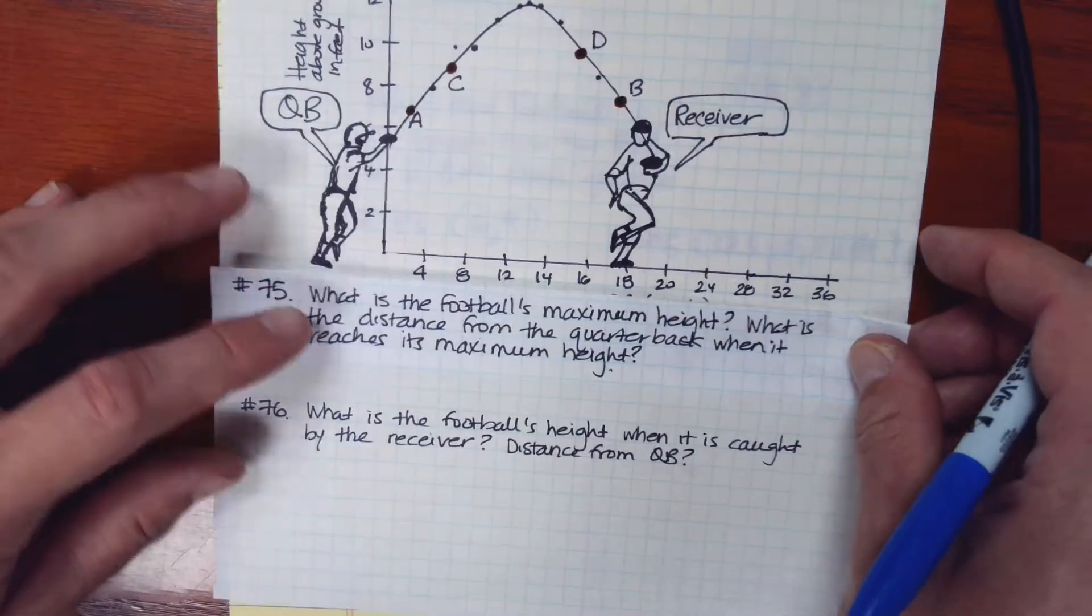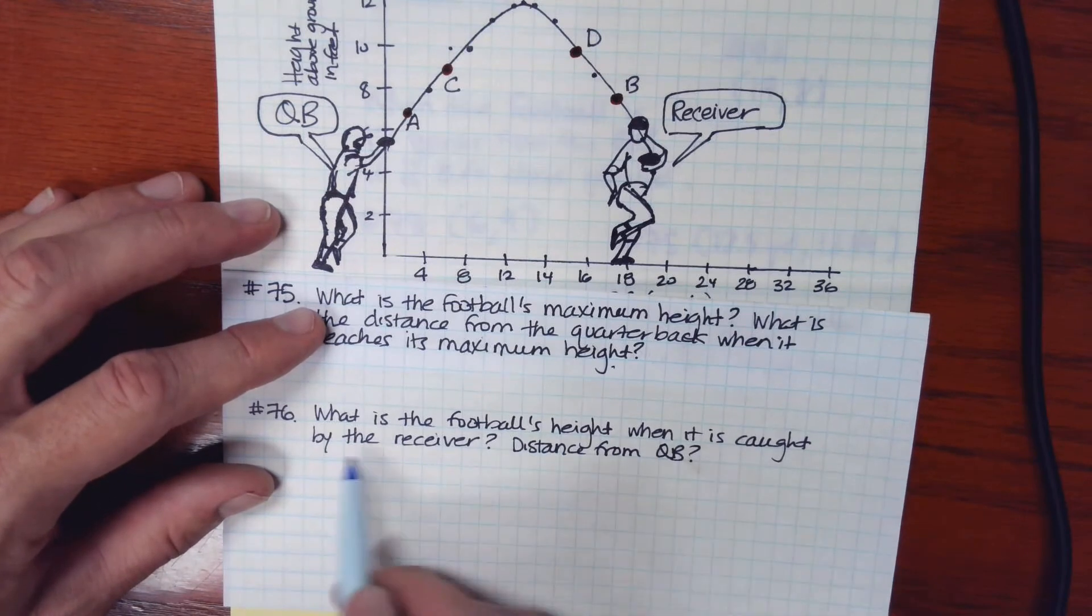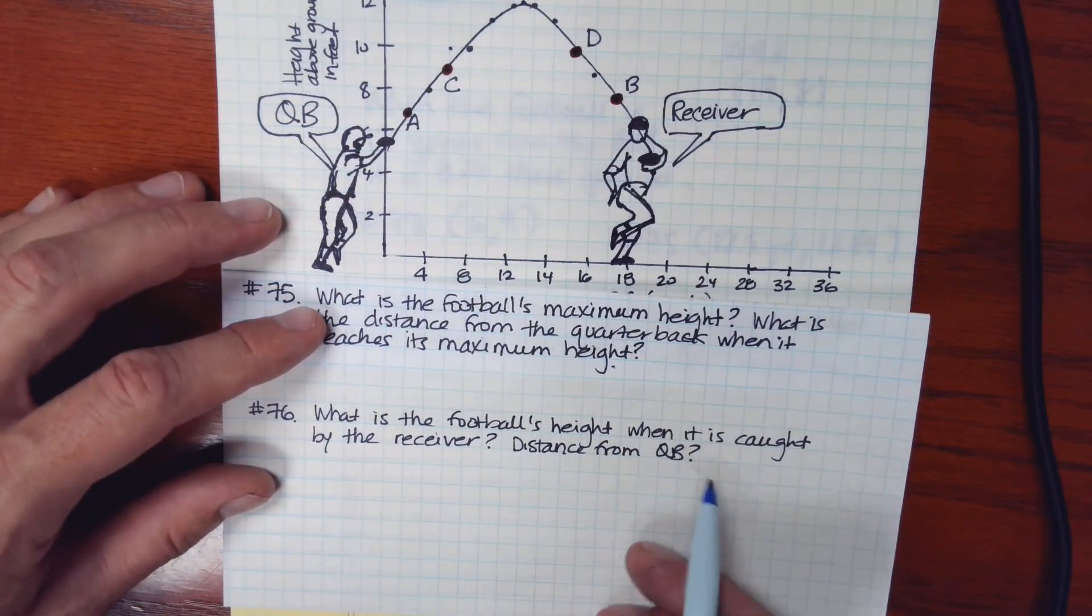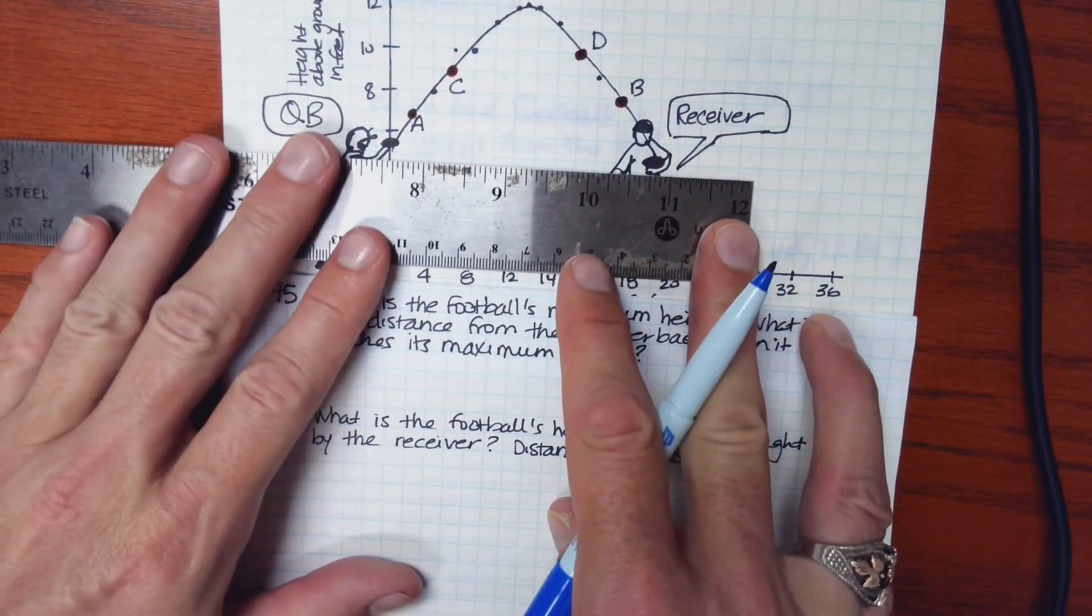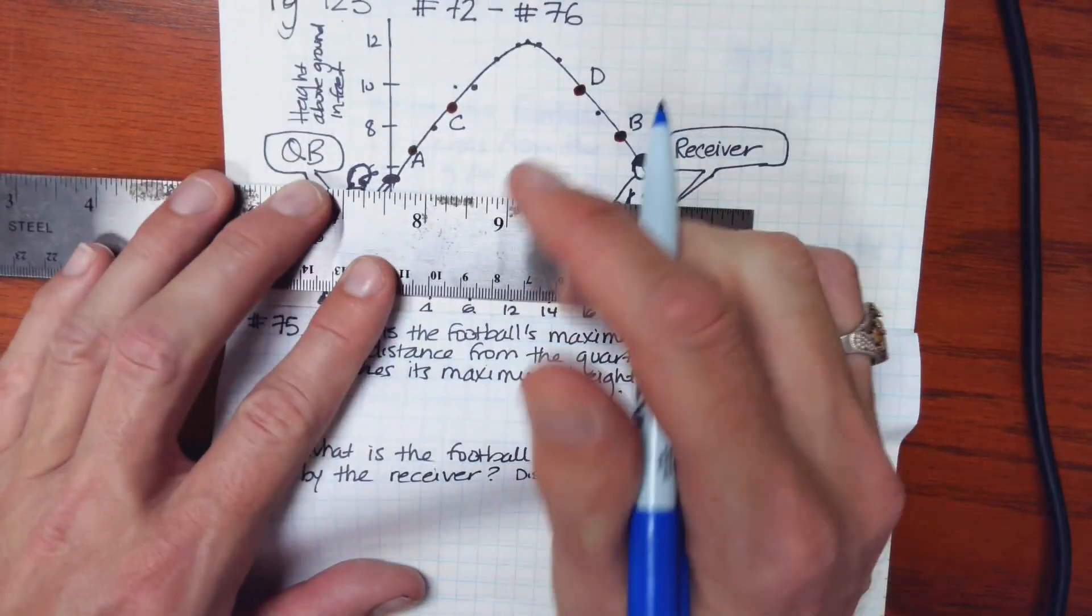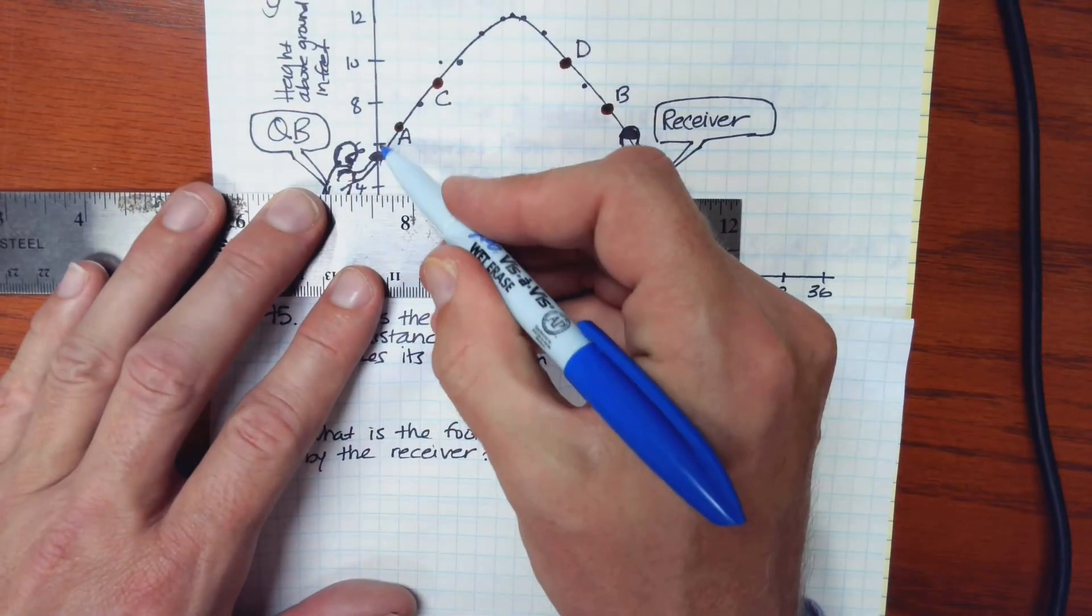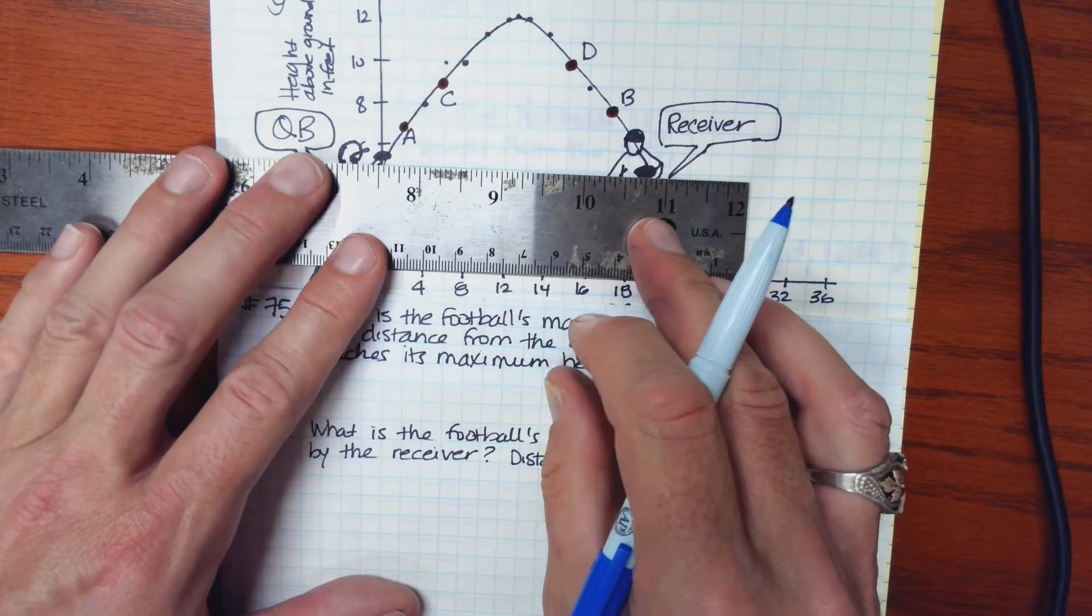And there's another question here. It says, what is the football's height when it's caught by the receiver? And what's the distance from the quarterback? So if we look across here, here's the height when it's caught by the receiver. So that's in between these two marks. So that's at 5 feet.